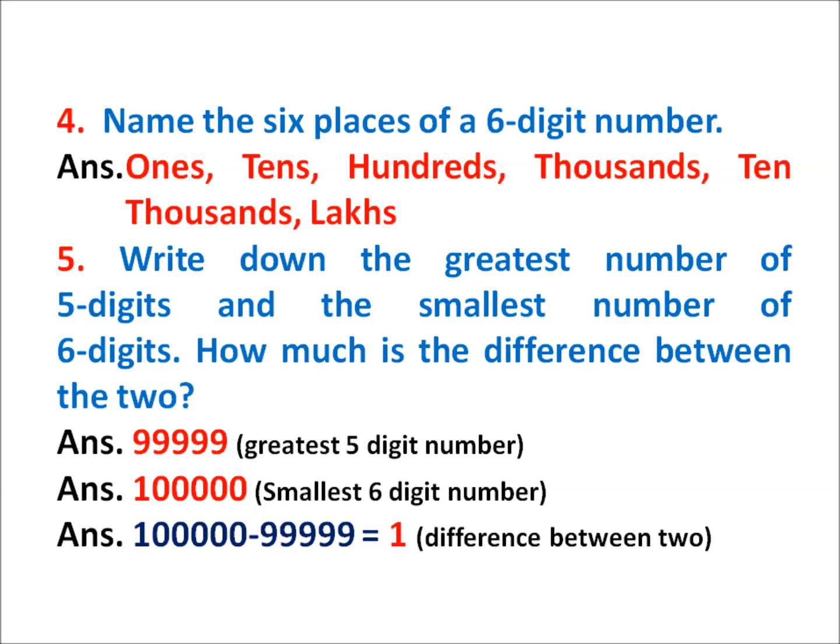Now, question number 5 is: Write down the greatest number of 5 digits and the smallest number of 6 digits, and how much is the difference between the two? First, clear the question — you have to write the greatest number of 5 digits, and then the smallest number of 6 digits. As we know, the greatest number of 5 digits is 99,999, and the smallest number of 6 digits is 1 lakh. You have to find the difference, so we subtract 99,999 from 1 lakh, and you will get the answer: 1. So, 1 is the difference between these two numbers.